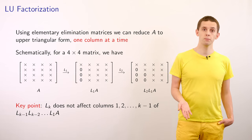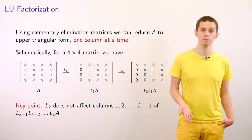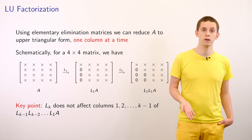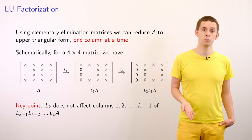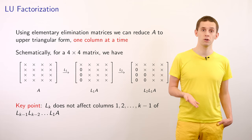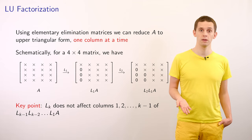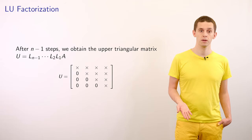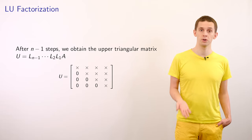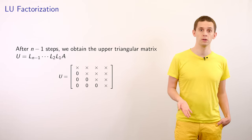We apply our elementary elimination matrices to A one column at a time to convert it to triangular form. For a 4-by-4 matrix A, after applying L_1 we have zeros in the first column below the diagonal. After applying L_2 we also have zeros in the second column below the diagonal. A key point is that when we apply elimination matrix L_k, it has no effect on columns 1 to k-1. After n-1 steps we end up with an upper triangular matrix U equal to the product L_{n-1} ⋯ L_1 applied to A.